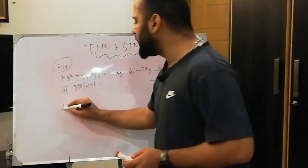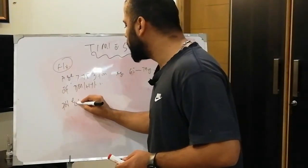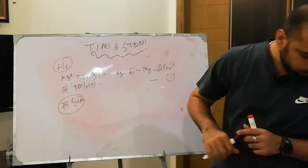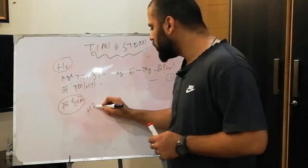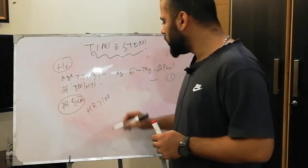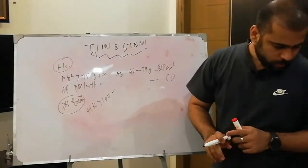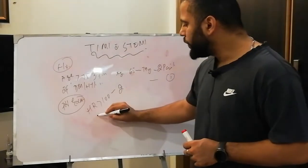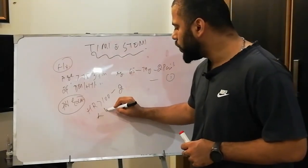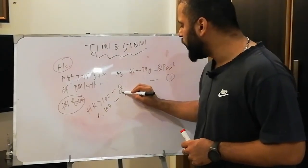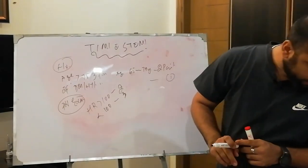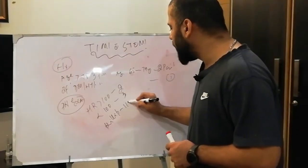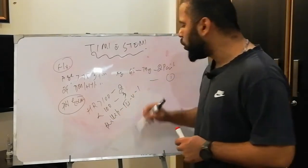On physical examination, if the heart rate is more than 100, then two points. If the blood pressure is less than 100, then three points. And if the patient has a worse Killip class — Killip class three to four — then one point.